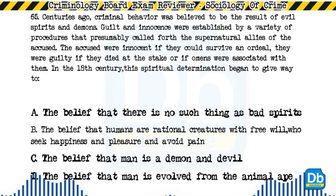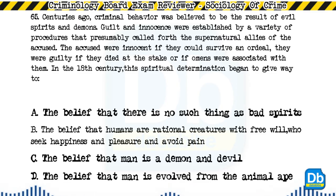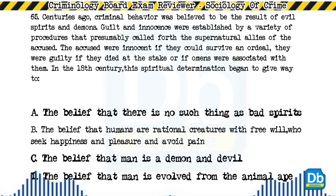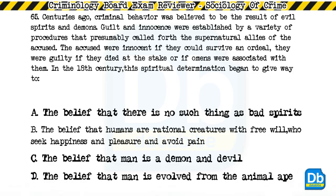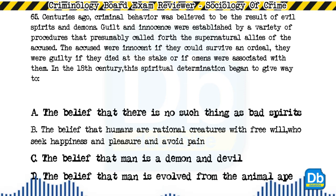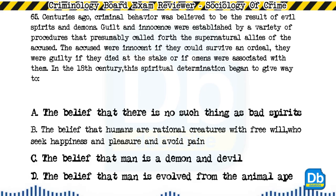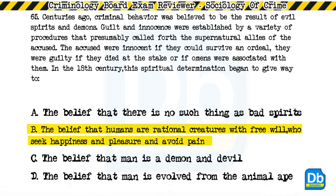Question 65: Centuries ago, criminal behavior was believed to be the result of evil spirits and demons. Guilt and innocence were established by procedures that called forth supernatural allies of the accused — the accused were innocent if they could survive an ordeal, guilty if they died at the stake or if omens were associated with them. In the 18th century, this spiritual determination began to give way to: a) the belief that there is no such thing as bad spirits, b) the belief that humans are rational creatures with free will who seek happiness and pleasure and avoid pain, c) the belief that man is a demon and devil, d) the belief that man evolved from the animal ape. The answer is B.